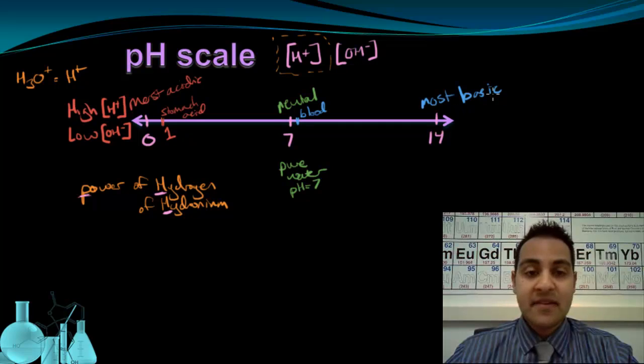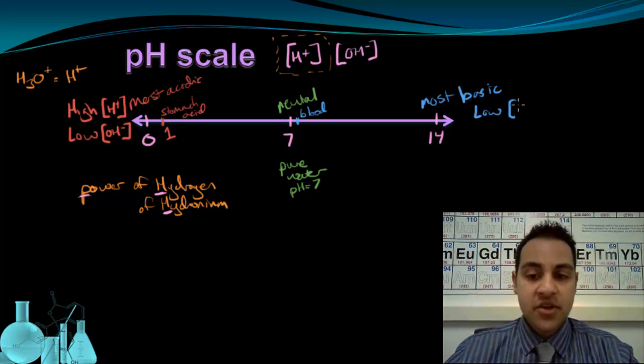That also means, for a very basic solution over here at 14, that I have a very low concentration of H+ ions, but that I have a high concentration of OH-, and based on the trend we're seeing with the scale with 0 being on one end and 14 being on the other,